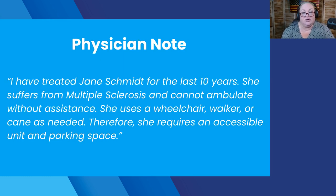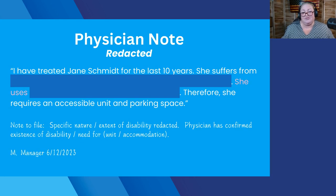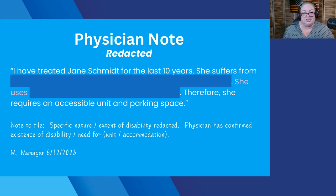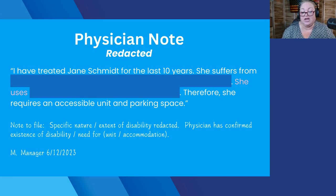Here's an example of a physician's note: 'I've treated Jane Schmidt for the last 10 years. She suffers from multiple sclerosis. She can't ambulate without assistance, uses a wheelchair, walker, or cane, and she requires an accessible unit and parking space.' There's information I need there and information I don't. So I'm going to redact it: 'I've treated Jane Schmidt for the last 10 years. She suffers from [diagnosis redacted]. She uses [equipment redacted]. Therefore, she requires an accessible unit and parking space.' I know she's disabled and she needs a parking space, and there's a note at the bottom referencing that specific disability information has been redacted, physician confirmed she's disabled and needs what she's asking for — signed and dated.